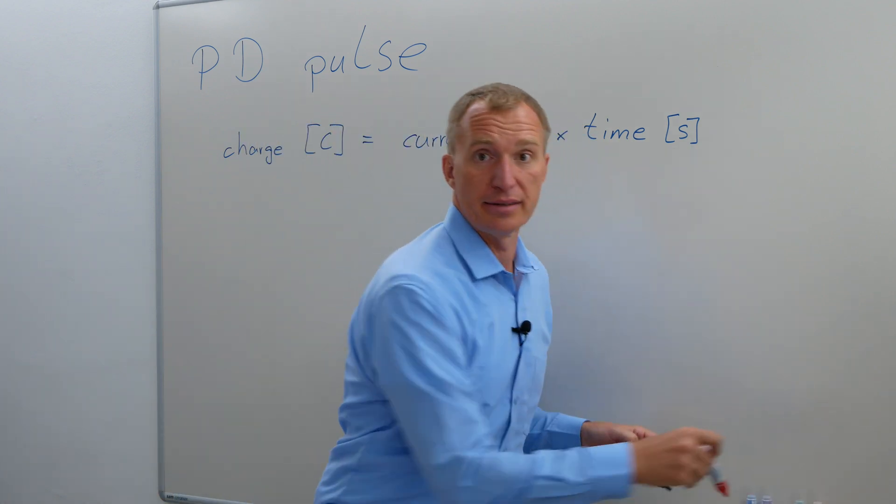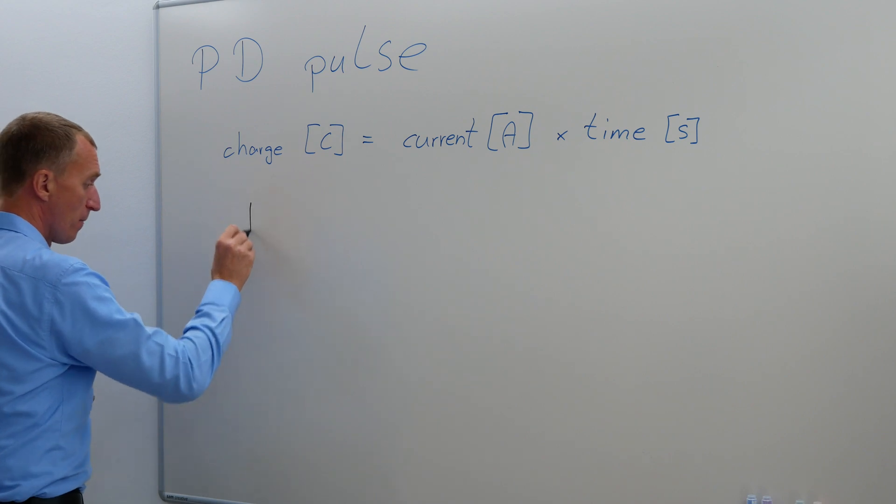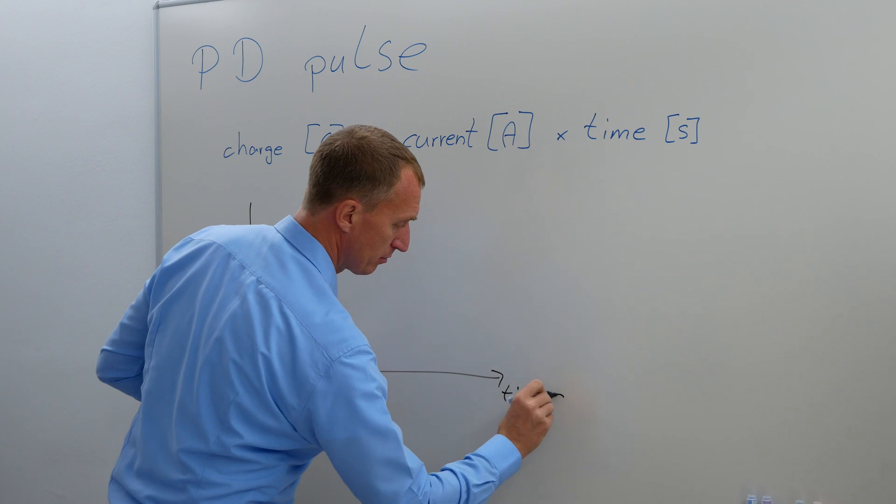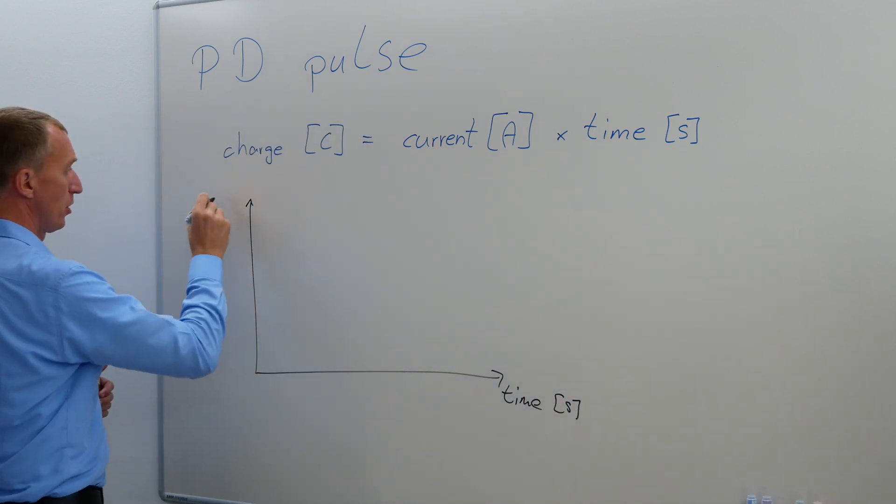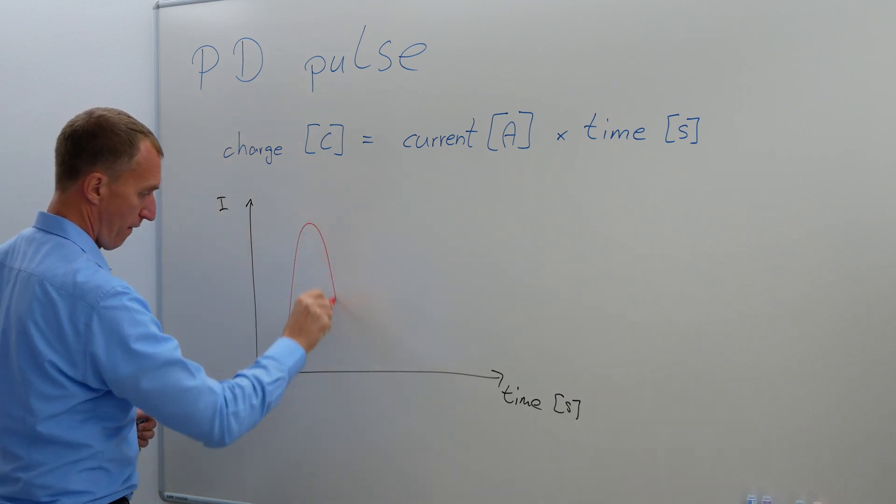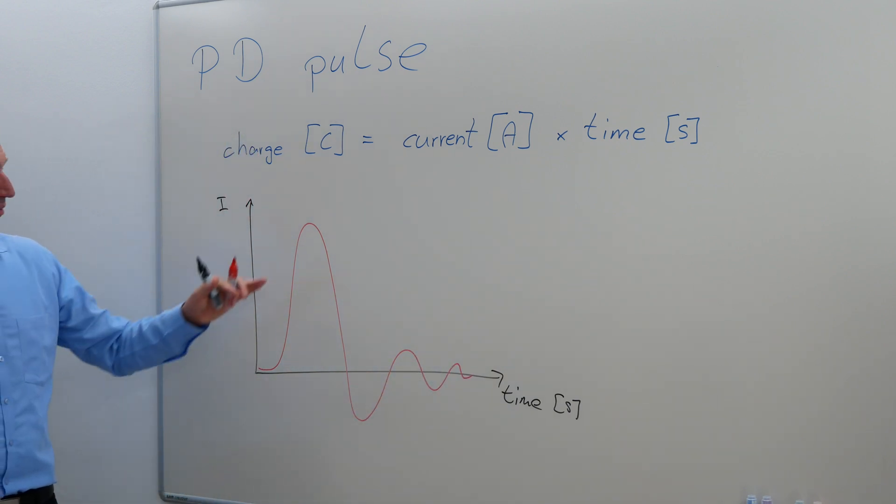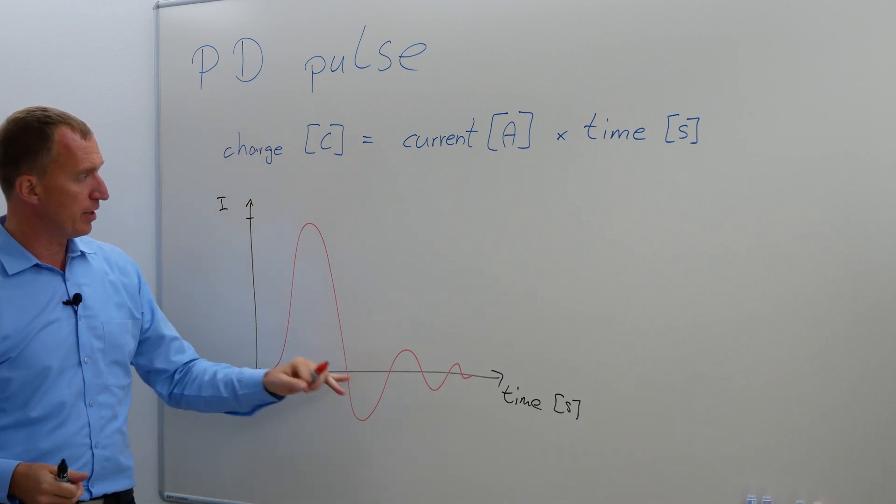But let's look at how a partial discharge pulse looks like. So let's have this diagram and we're having time here, usually in seconds, and we have current here. A partial discharge pulse looks a little bit like this. And we have a height or we have a value here, but most importantly is what is actually the area below the curve.